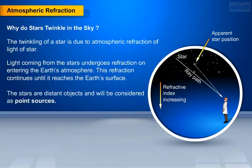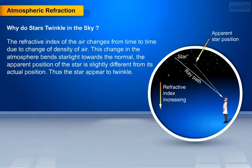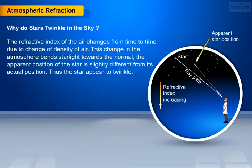The stars are distant objects and will be considered as point sources. The refractive index of the air changes from time to time due to change of density of air. Let us take three layers A, B, C. Light coming from the star refracts at layer A due to its density. This refracted ray again refracts at layer B and layer C due to the change in their densities.